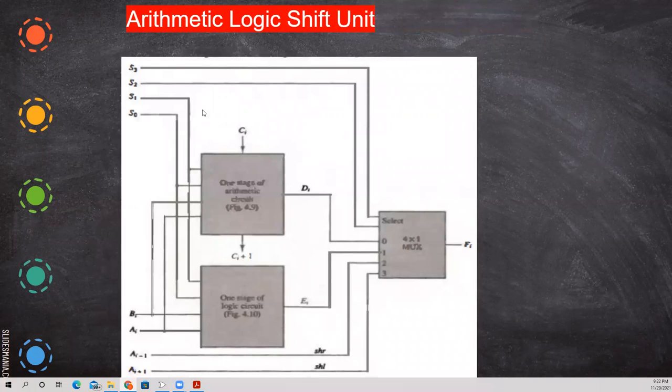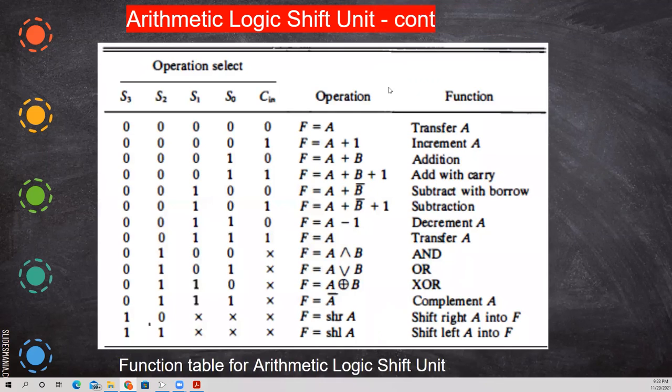Now if you see this arithmetic both combined. So far what we have seen is arithmetic separately, logical separately and shift separately. This is a combined block diagram. So we have one stage of arithmetic circuit, logic circuit and 4 by 1 multiplexer to select among them. This is a block diagram of a combined arithmetic and logical unit.